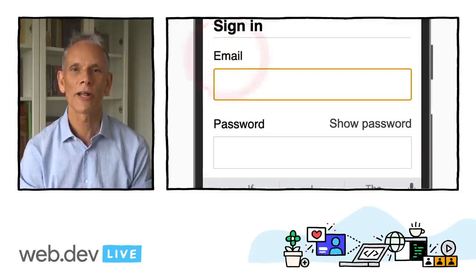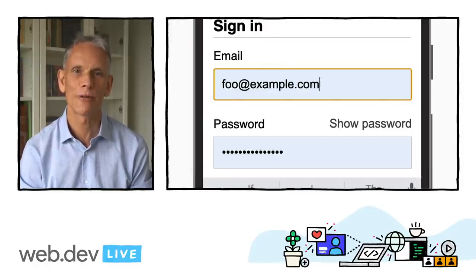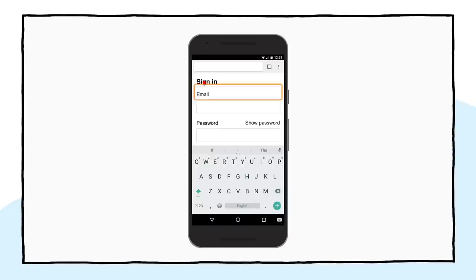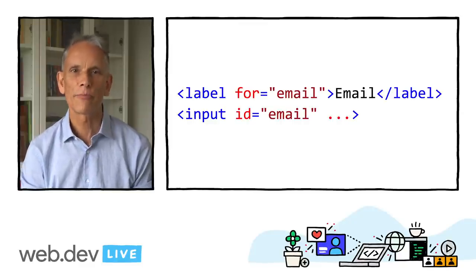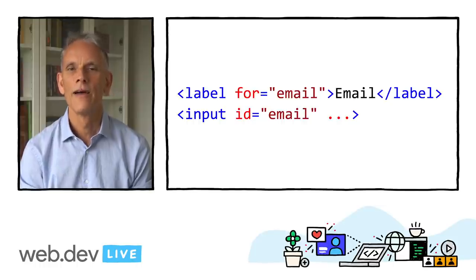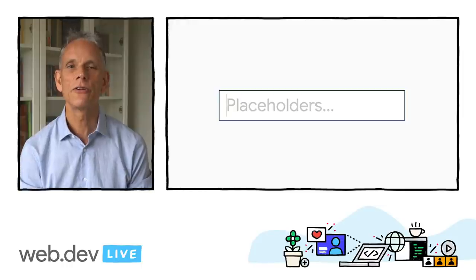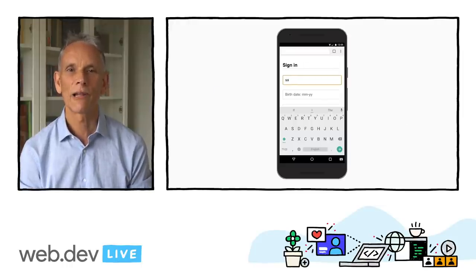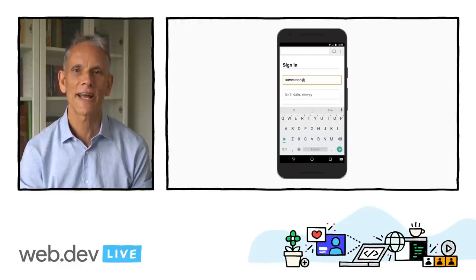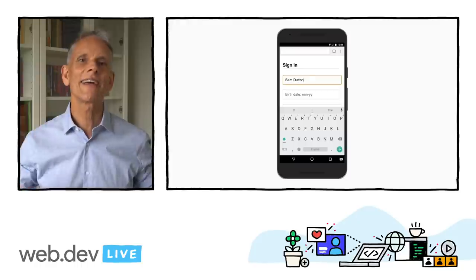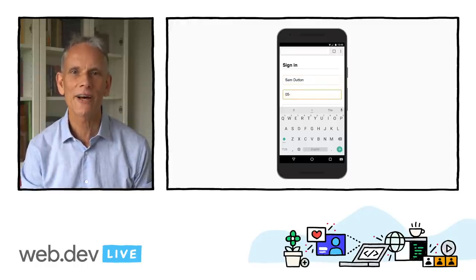To label an input, use a label. There are two reasons: first, a tap or click on a label moves focus to the input it's associated with. Second, screen readers announce label text when the label or the label's input gets focus. You associate a label with an input by giving the label's 'for' attribute the same value as the input's ID. Placeholders can be useful, but don't use them as input labels. People are liable to forget what the input was for once they've started entering text, especially if they get distracted — was I entering an email address, a phone number, or an account ID?